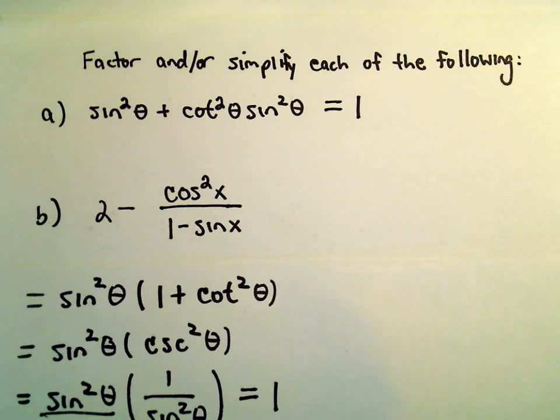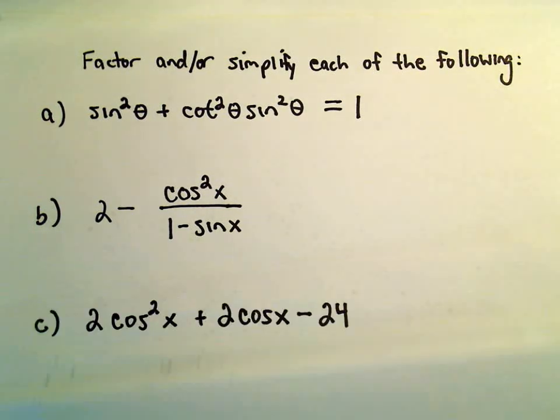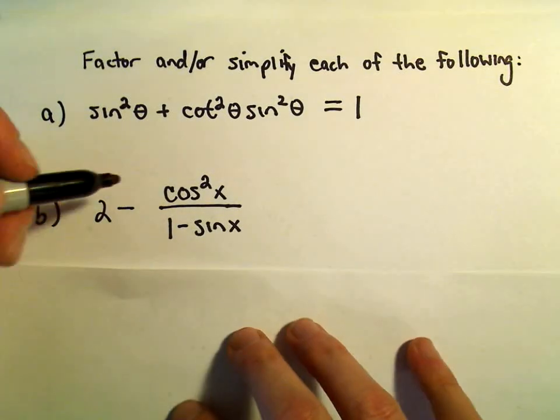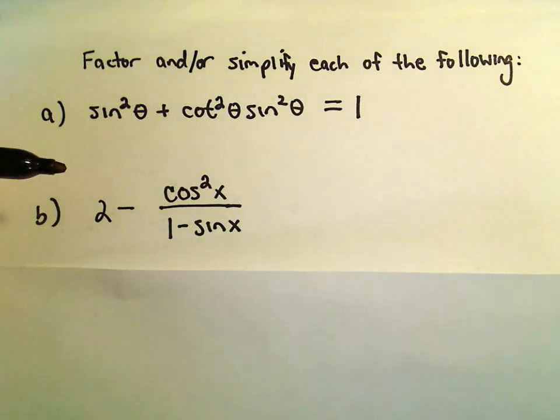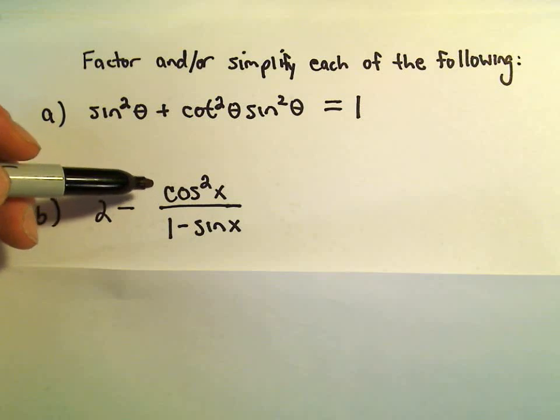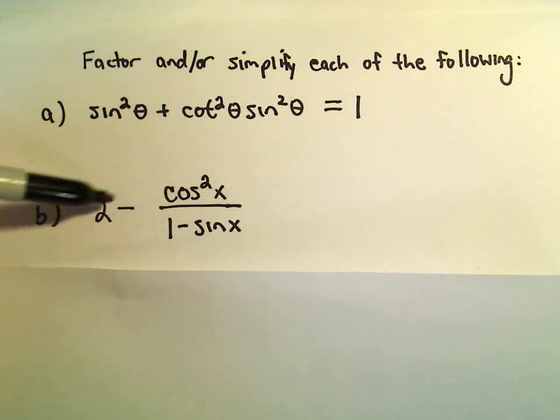Let's maybe do B here as well. So let's see. We've got 2 minus cosine squared over 1 minus sine x. So a couple different things that we could do here. Again, the first thing that kind of, we could try to get common denominators and group things together.